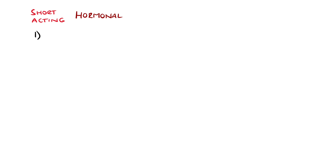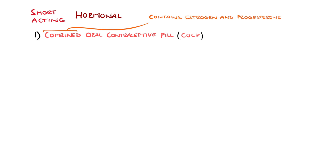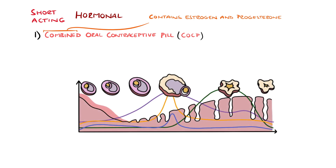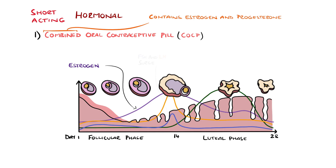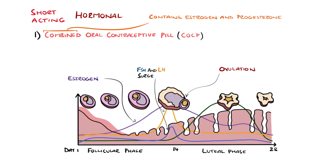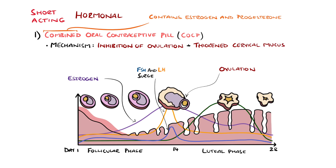Probably the most well-known short-term hormonal is the combined oral contraceptive pill, which includes both oestrogen and progesterone. Remember that the natural ovulation cycle involves the follicular phase, typically days 1 to 14, that features release of follicle-stimulating hormone and luteinising hormone, leading to oestrogen release and build-up of the endometrium in preparation for implantation. An FSH and LH surge around day 12 leads to ovulation, featuring release of an oocyte that could then be fertilised by sperm. The oestrogen in the combined oral contraceptive pill keeps FSH and LH low, and so no ovulation takes place. They also have an effect on cervical mucus, making it thicker and less permeable to sperm.